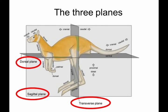We also have a convention for cutting brain tissue into planes. The planes typically used are the dorsal plane, sagittal plane, and transverse plane. You'll need to remember these when we talk about brain slices.